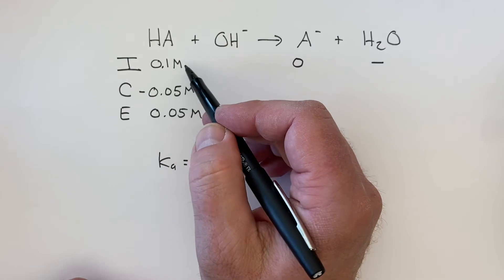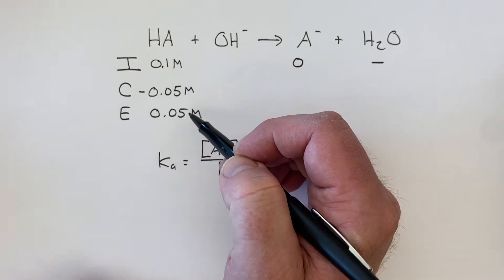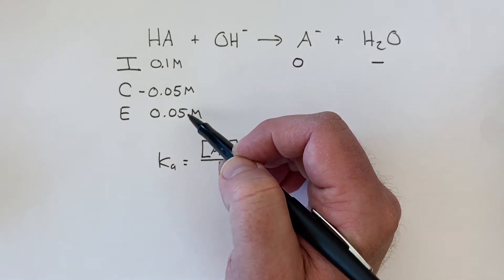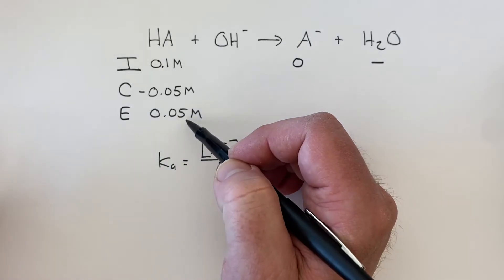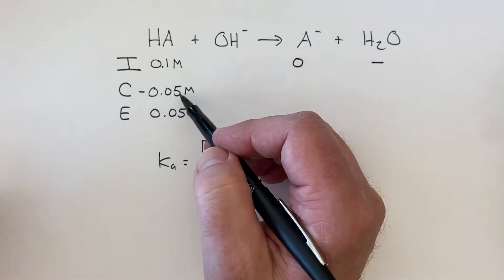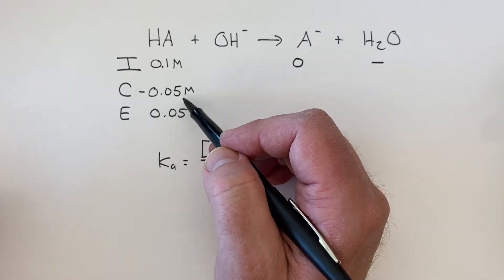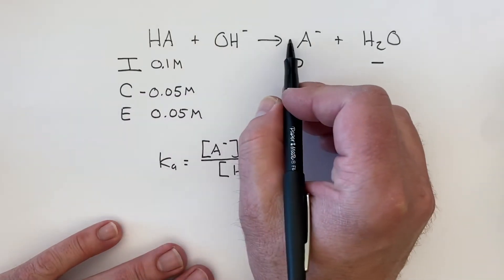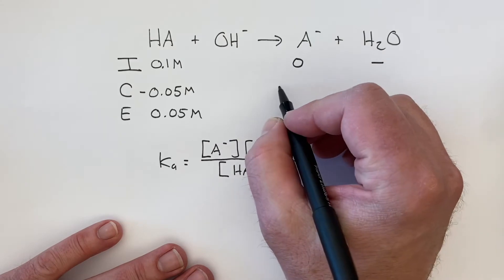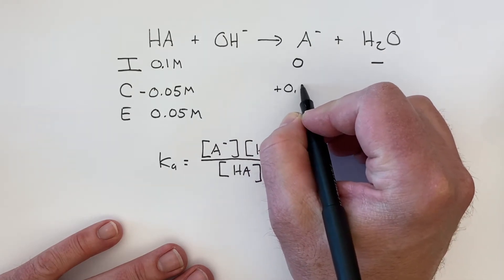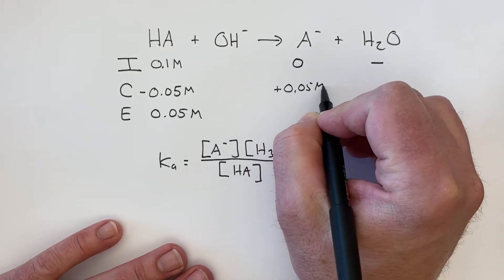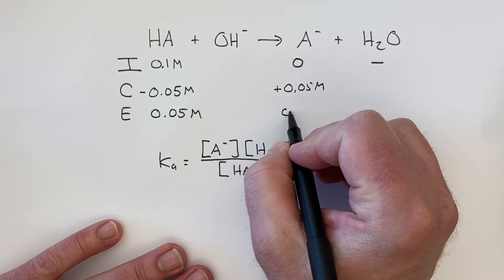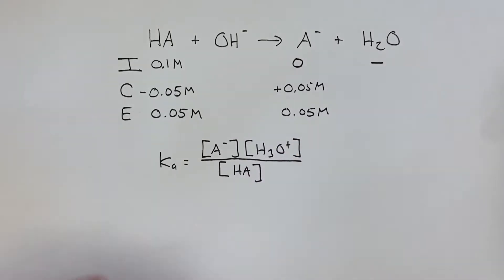Which means it would have gone down 0.05 moles per liter to get to there. Now because this goes down in a one to one ratio as this comes up, this would have to come up by 0.05 moles per liter and it would also then have a concentration of 0.05 moles per liter.